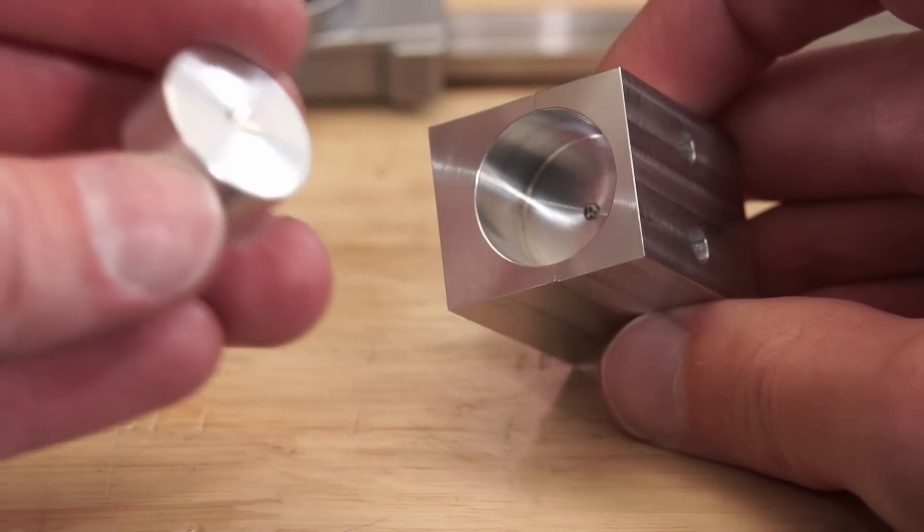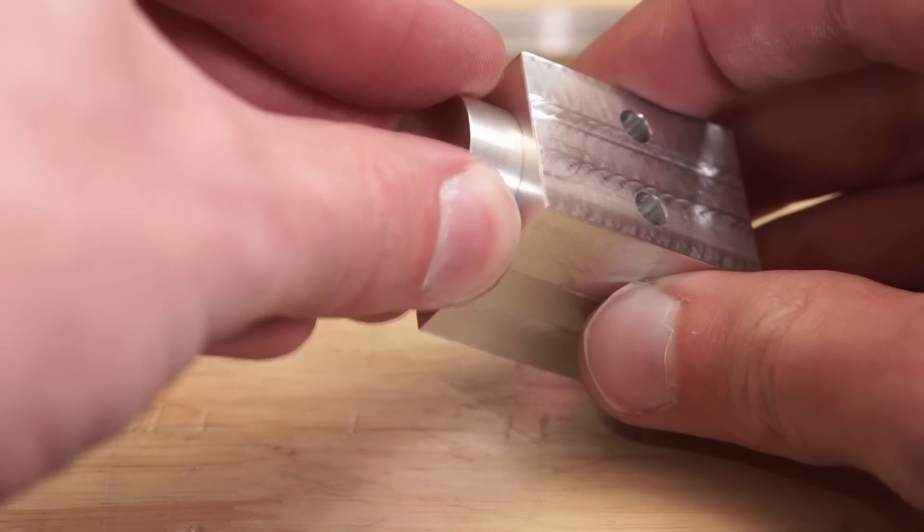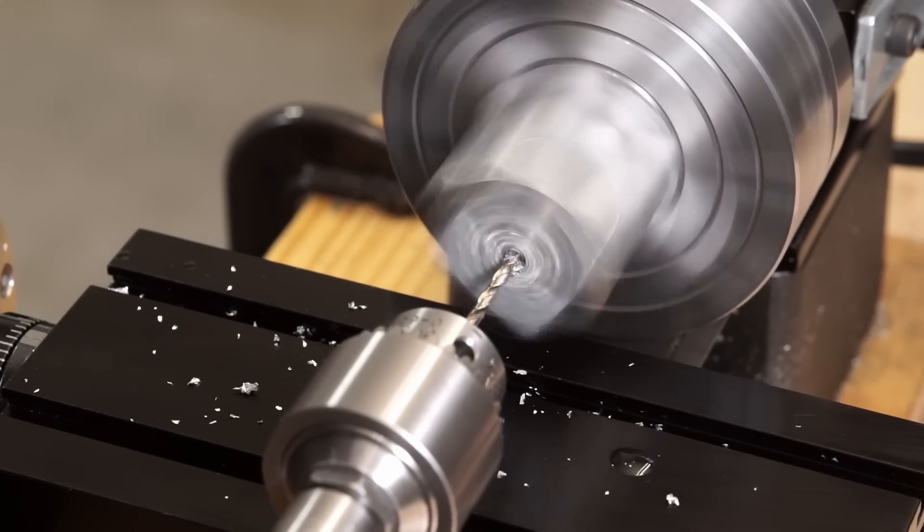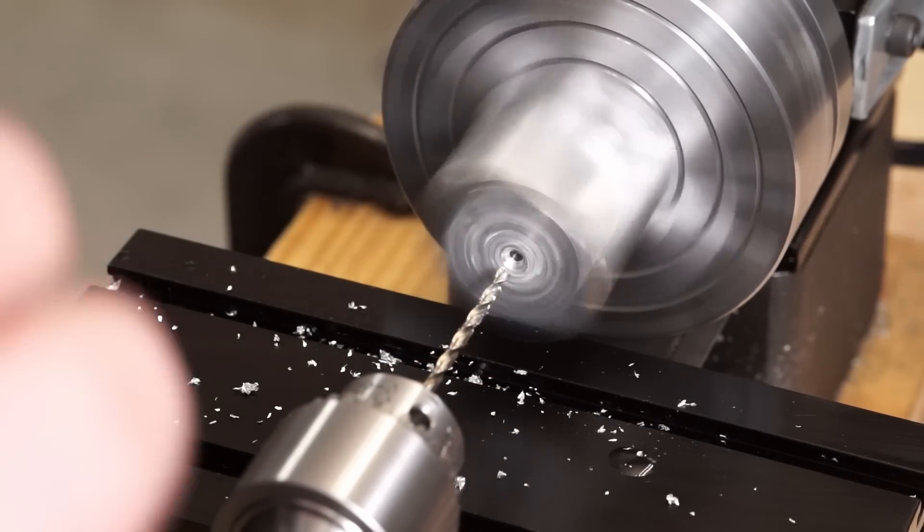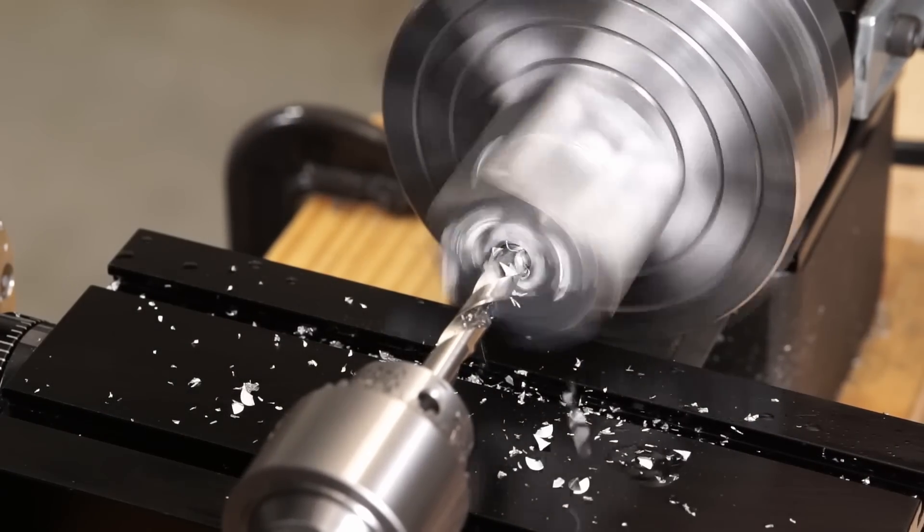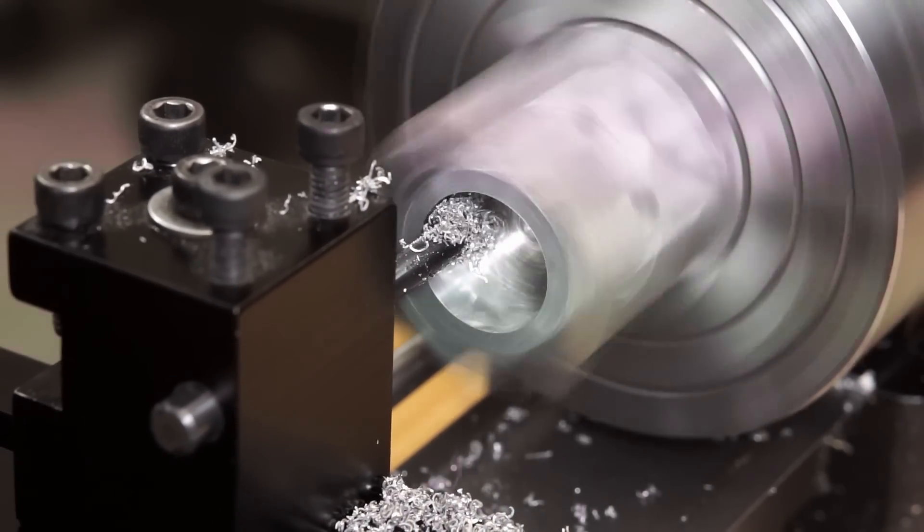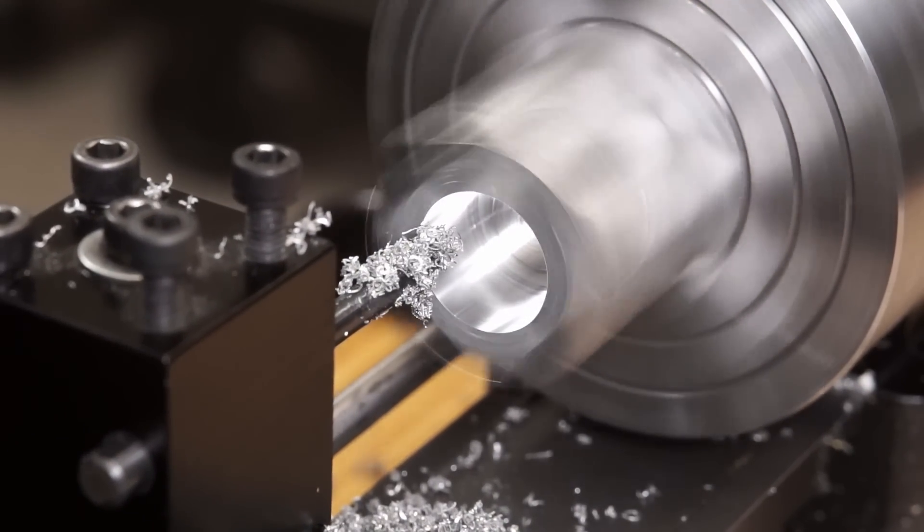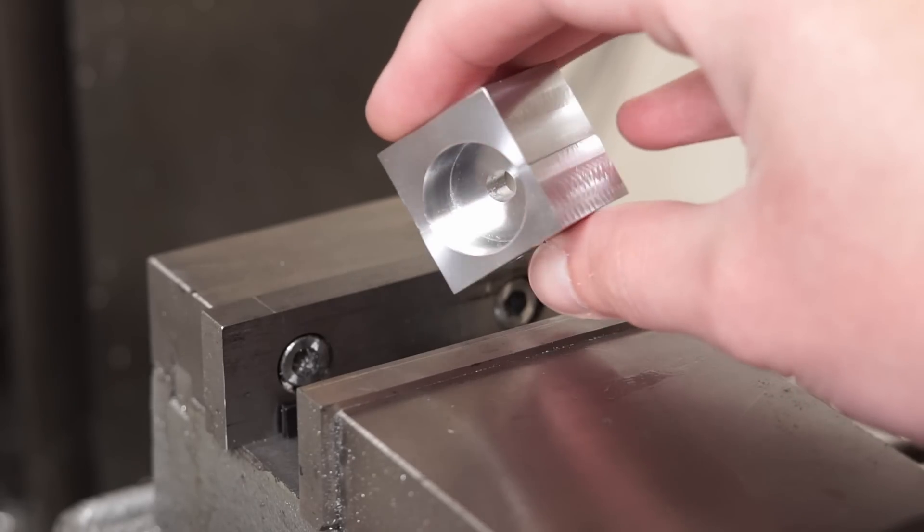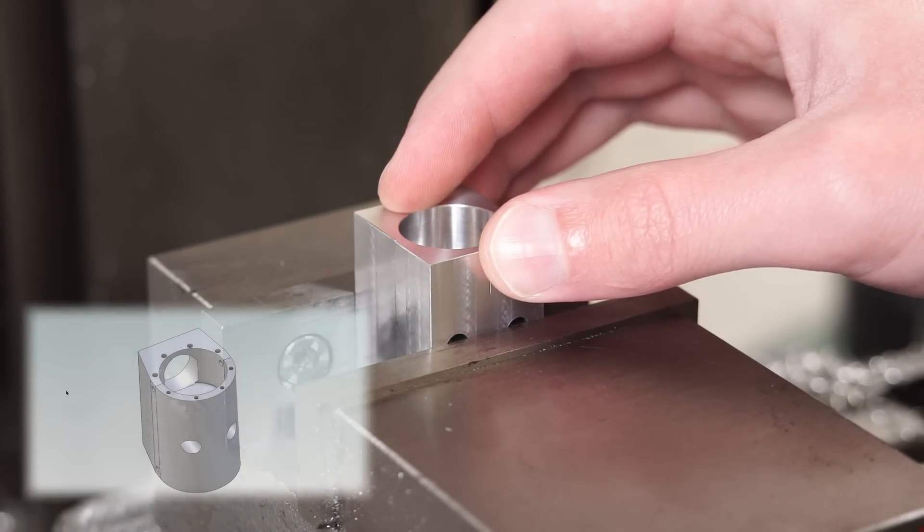With the first side complete, I went ahead and made this little plug so we can clamp on it. We can turn the other side without crushing this side. Now it's on to the milling machine to drill the mounting holes for the front bearing housing and the rear cover.